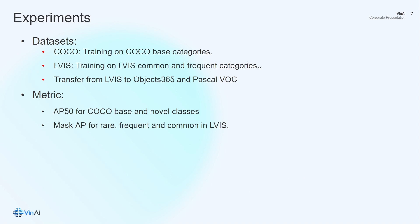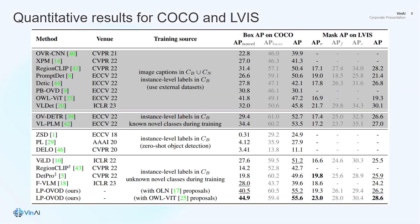We conduct experiments on popular benchmarks: COCO, LVIS, and we do transfer learning to Objects365 and Pascal VOC. We follow the standard evaluation metrics, which is AP50 for COCO base and novel classes, and mask AP for rare, frequent, and common on LVIS. Our results suggest that our method outperforms baseline methods such as VILD, DETIC, and VisCLIP on the COCO benchmark. When equipped with OBIT, a larger-scale open vocabulary object detector used as object proposals, our method can further boost results and can even improve with a larger backbone.